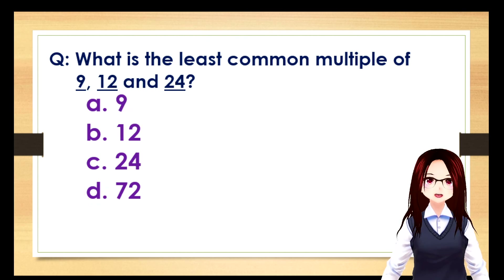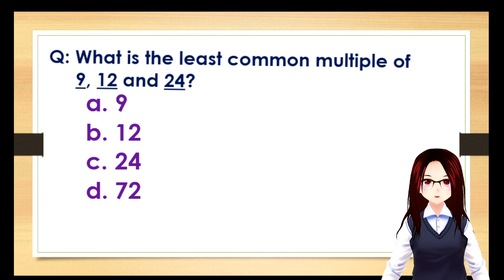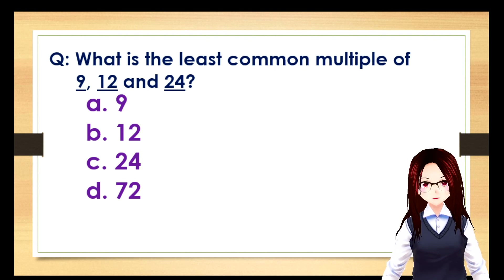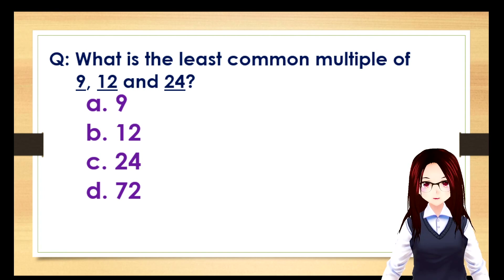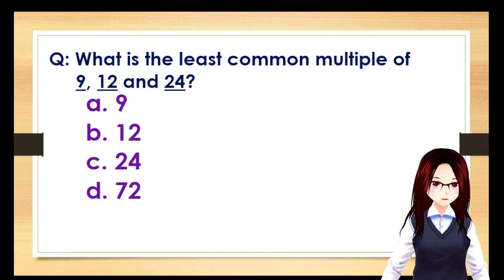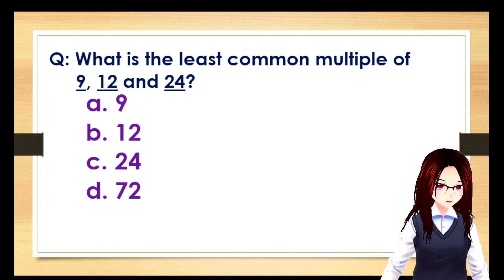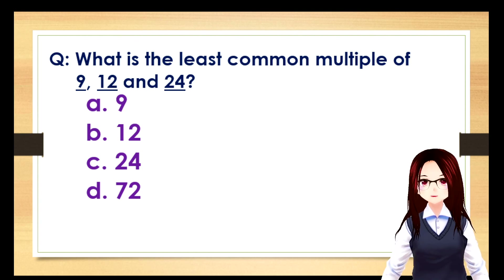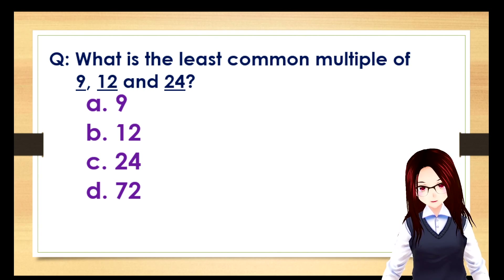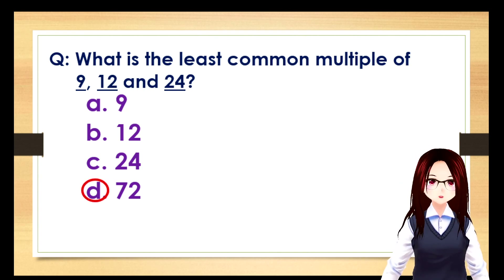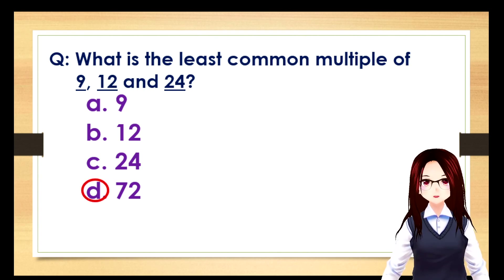What is the least common multiple of 9, 12, and 24? The correct answer is letter D: 72.